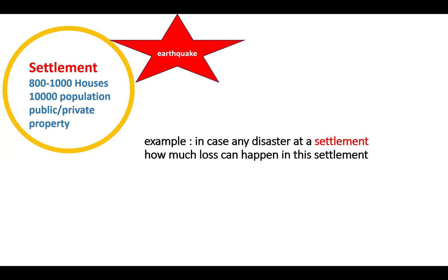Let me give a clear example of risk. Consider a settlement of 800 to 1000 houses with 10,000 population, plus public and private properties. Suppose an earthquake of magnitude 8 happens in this settlement. The risk represents the expected loss: 150 to 200 houses totally damaged, 200 to 300 houses partially damaged, 500 to 600 people dying on the spot, 1000 to 1500 people injured, and 10 to 15 crore rupees loss of public and private property. This is called risk or disaster risk.